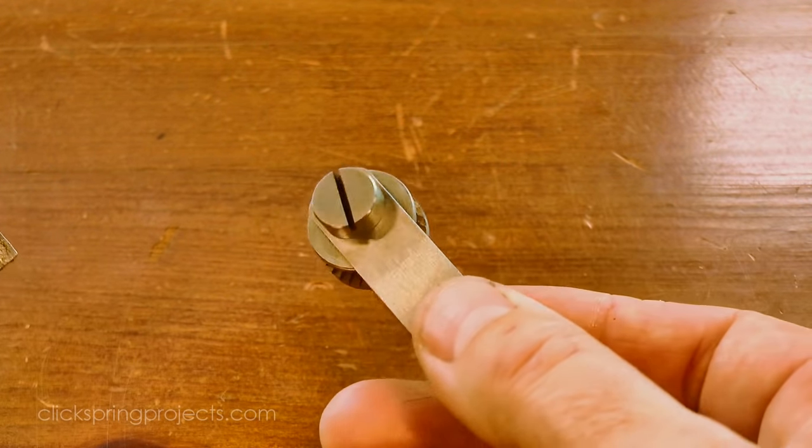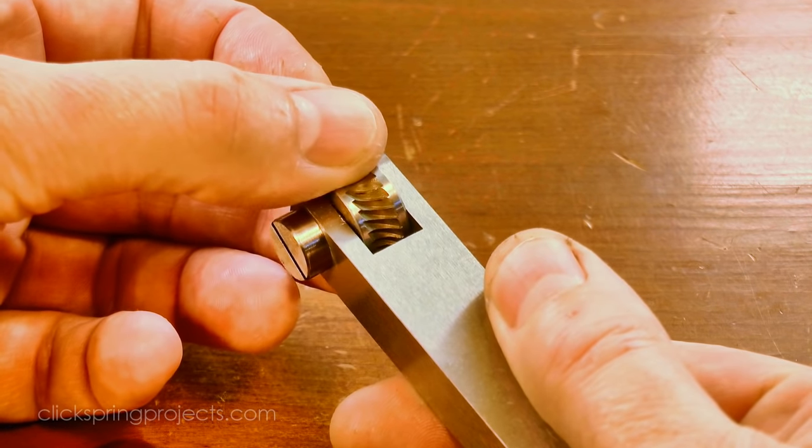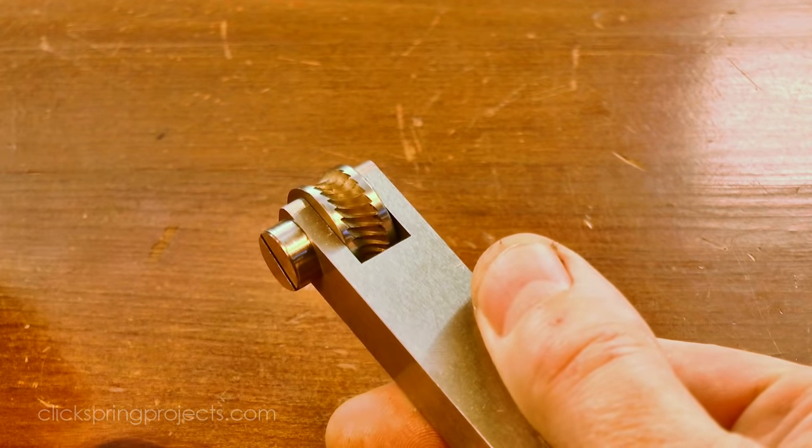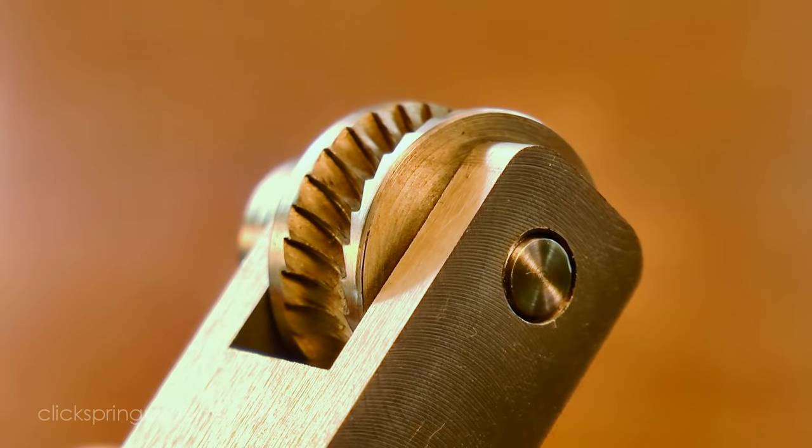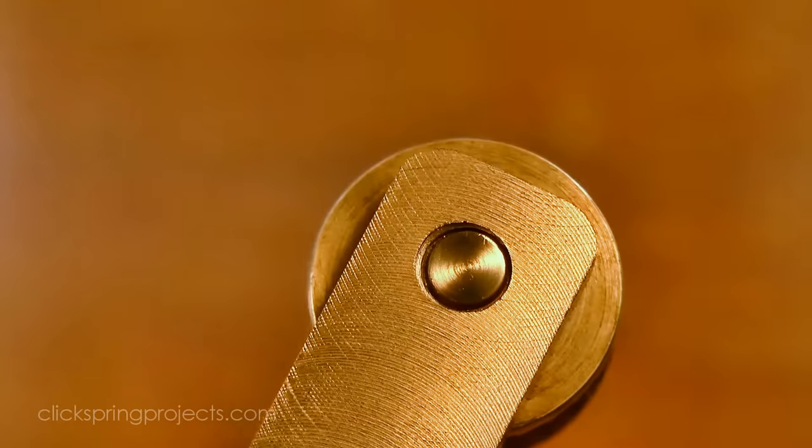So here's the end result. The knurls have a little bit of end shake and they run nice and free on that axle. And best of all, the holder has a clean edge on the side that will be closest to the chuck.